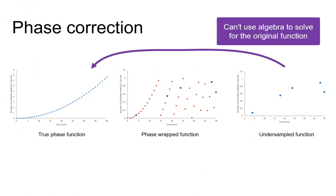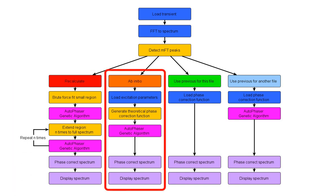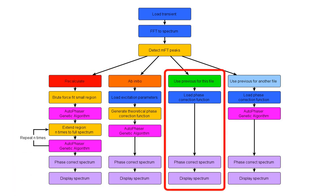In the Autovectus package there are four different methods provided to produce an absorption mode spectrum, and in this video we'll go through each one of them in turn. This flow diagram shows the four possible routes.